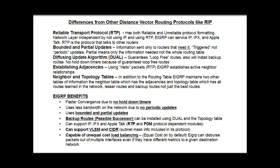EIGRP uses DUAL, the Diffusing Update Algorithm, to guarantee loop-free routes, and it will also install backup routes. The guarantee of loop-free routes is provided by the complexity of the algorithm and also because no hold-down timers are used, like in RIP.